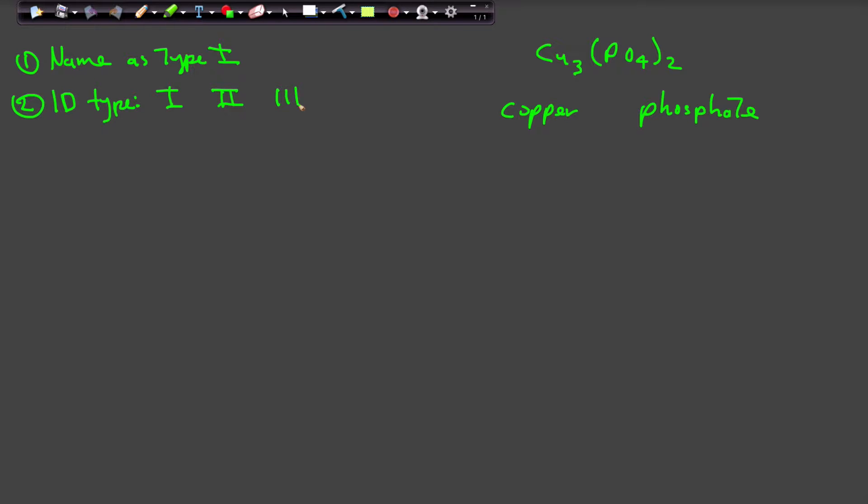That is to say, is it a Type 1, is it a Type 2, or is it a Type 3? How do you do that? Well, it's very simple.